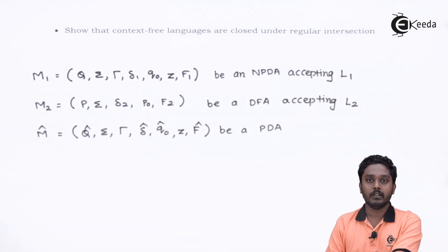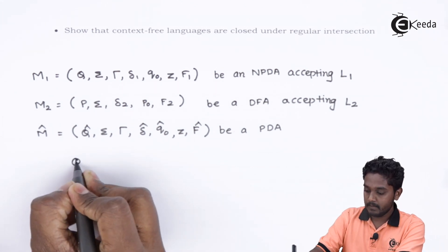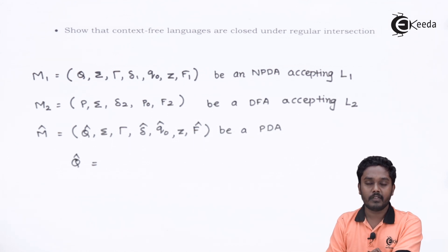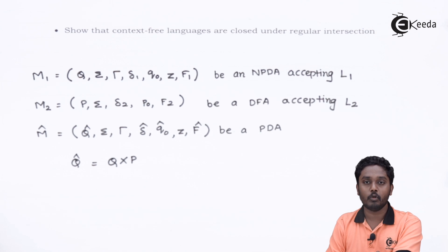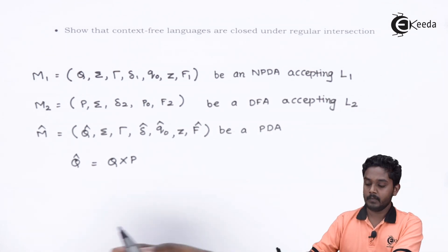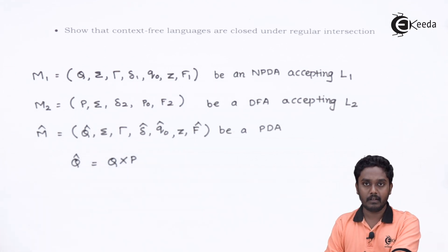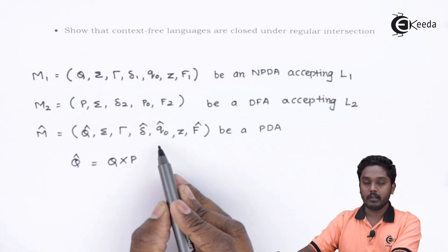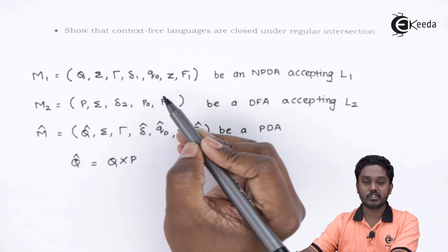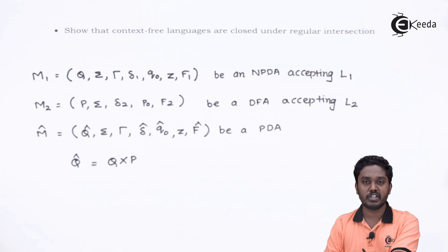Let us define M-cap now. The first component is Q-cap — the set of states. The set of states of the new machine is a combination of the set of states from M1 and M2, i.e., the Cartesian product Q cross P. Sigma is common to all three machines, so we don't need to redefine it. TAU is also the same as for machine M1. The initial state Q0-cap must be a combination of the initial states of M1 and M2, so Q0-cap is Q0 combined with P0.